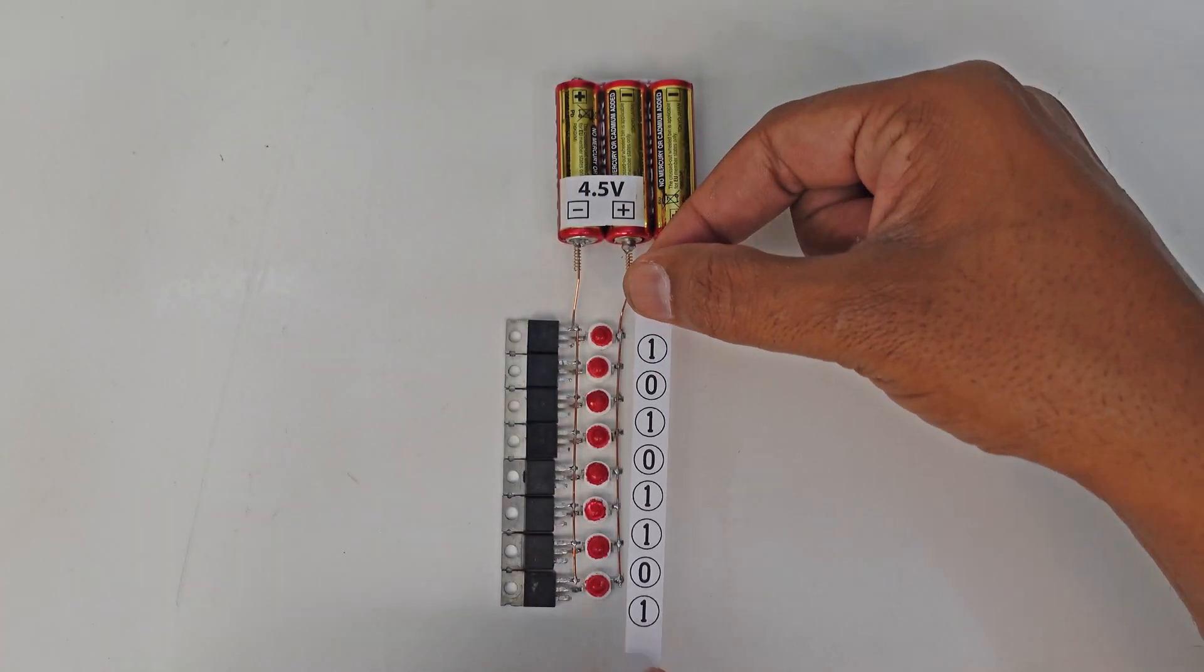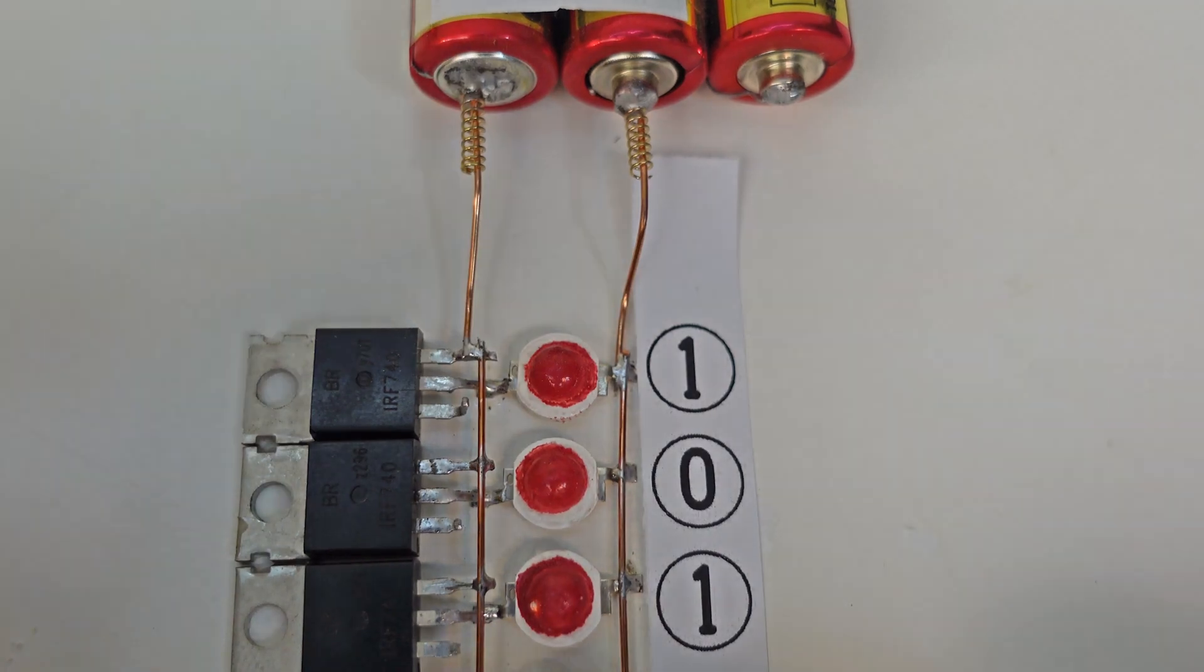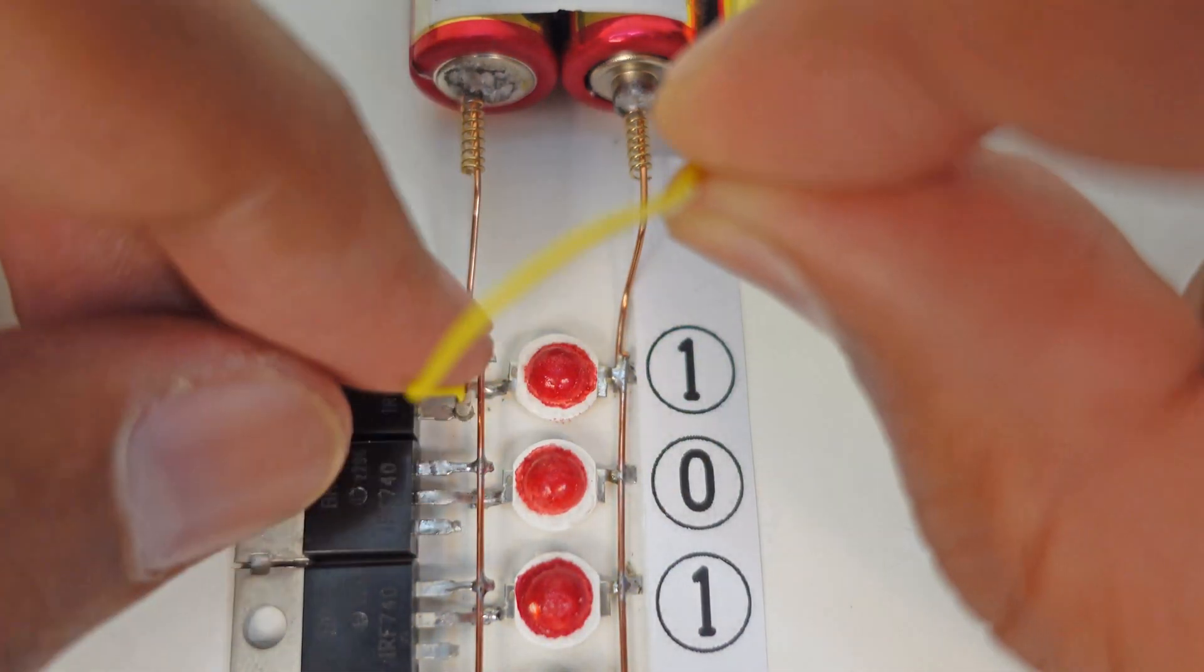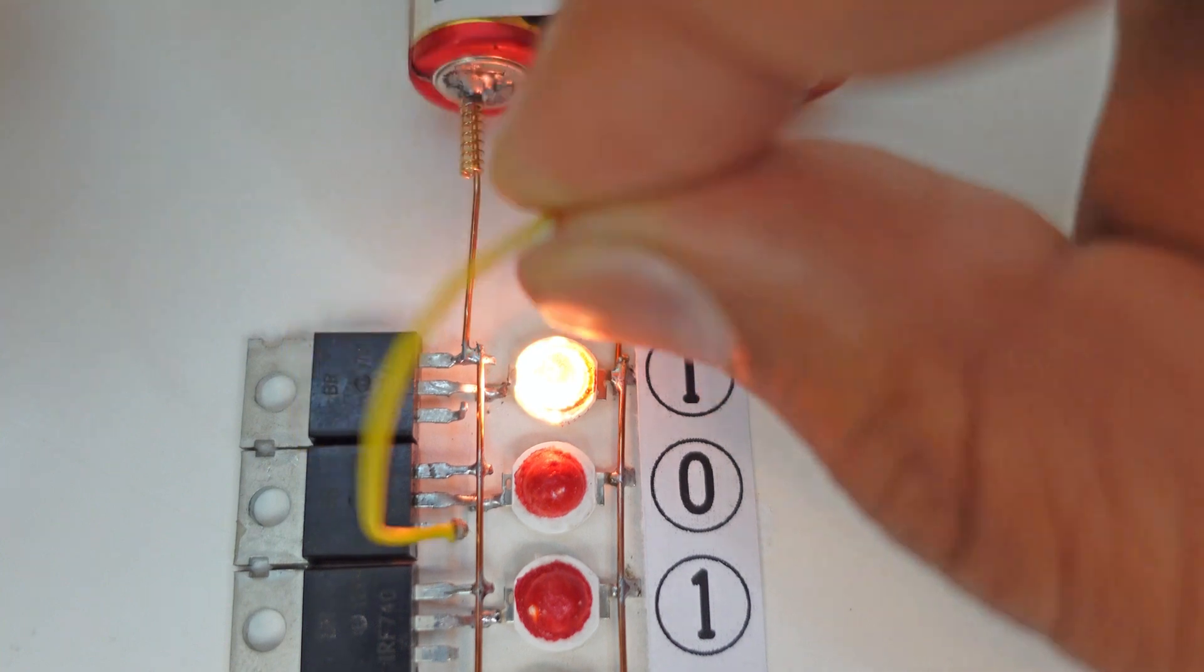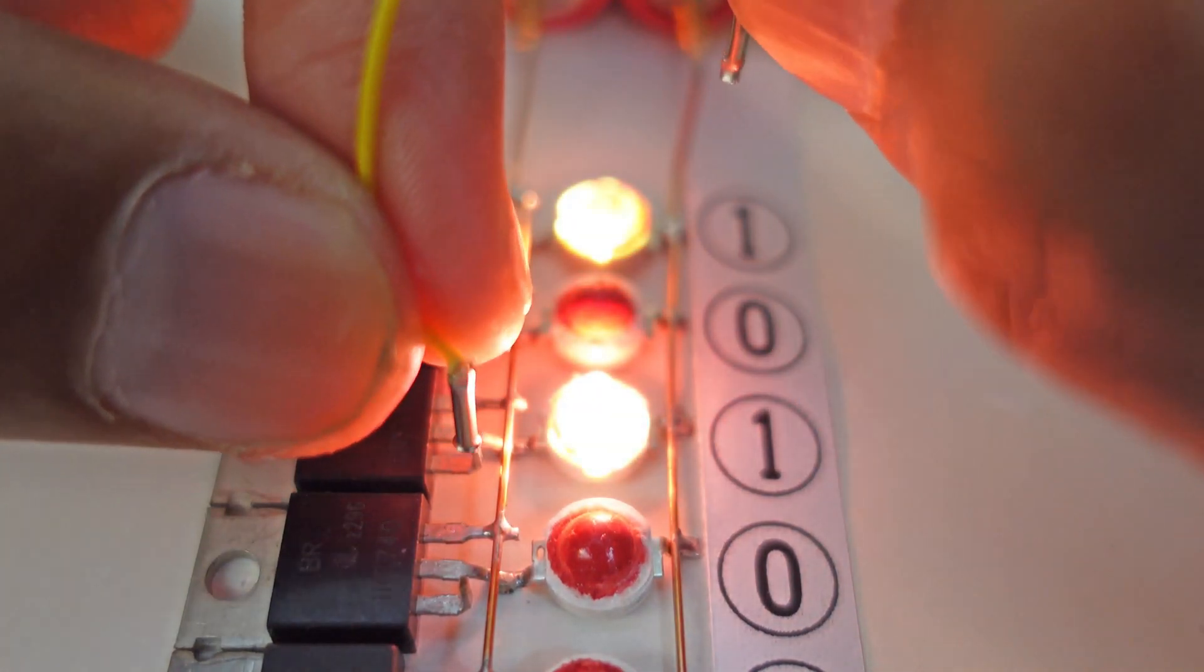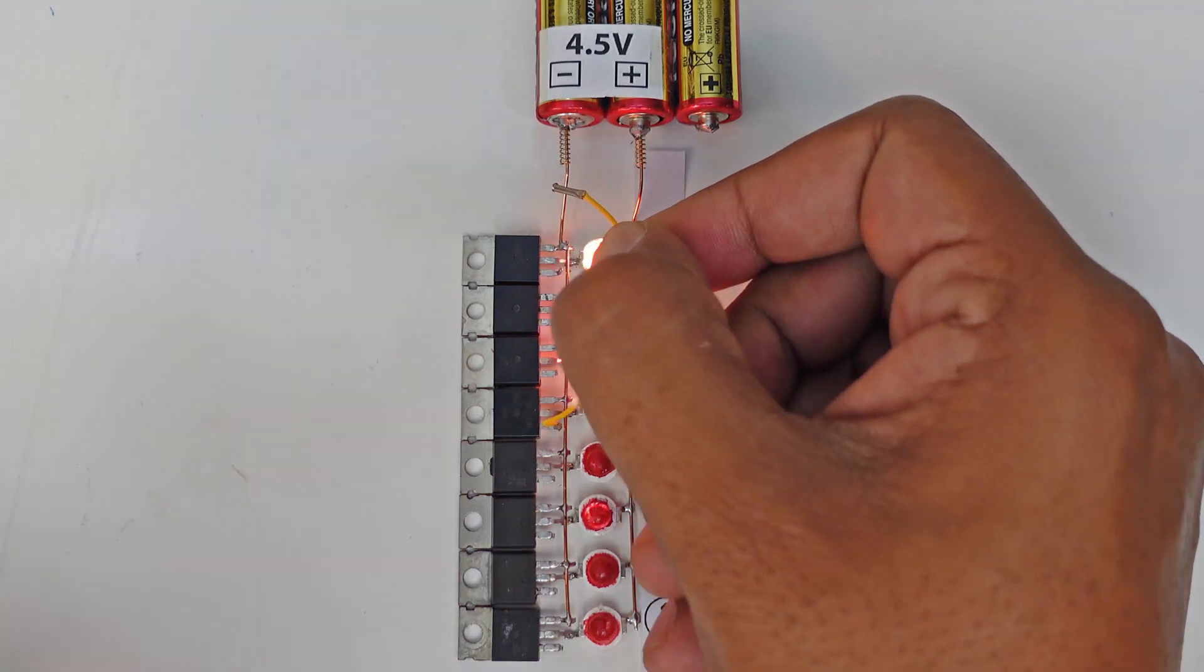This is our one byte data. Let's store it in our flash memory. The first bit is one, we turn the switch on. The second bit is zero, we turn off the switch. The third bit is one. The fourth bit is zero.